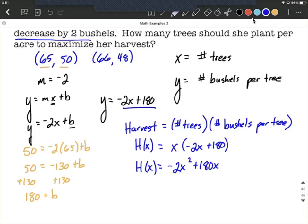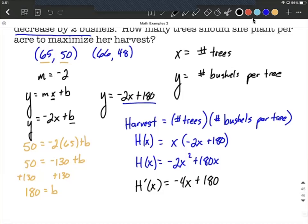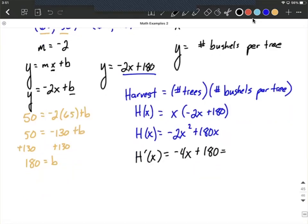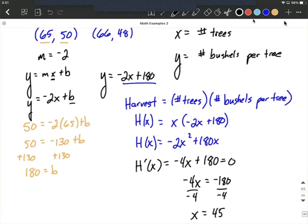A little bit of distributing, and we're going to get negative 2X squared plus 180X. Now, in order to maximize this, we'd like to find critical values or critical numbers. To do that, we want to take the first derivative and figure out when it equals zero. So the first derivative power rule, negative 4X to the first power plus 180. Setting it equal to zero, we're going to subtract the 180 to the other side, divide both sides by negative 4. And it looks to me like we get X is going to be 45.